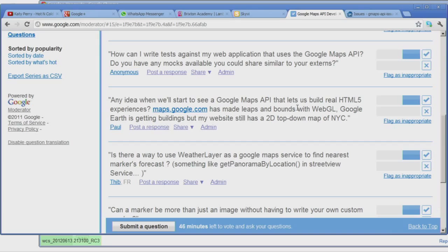So the next question is, any idea when we'll start to see a Google Maps API that lets us build real HTML5 experiences? I think this is getting at basically when will we see the Maps GL experiment that's currently running on maps.google.com available in the API. We can't comment on exact plans here. It is something that we're interested in. We still see issues around browsers being able to support WebGL to the extent that we need them in order to run the API across the web using WebGL. Certainly something to watch for in the future. No concrete plans for you to announce.